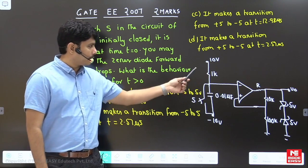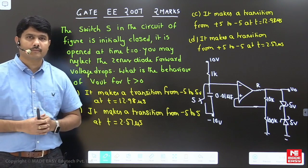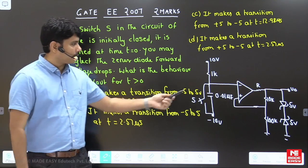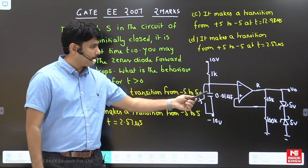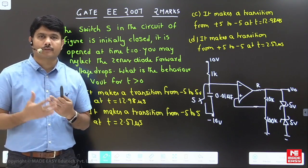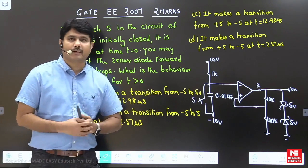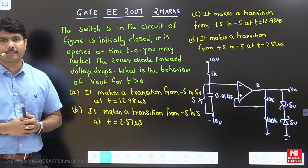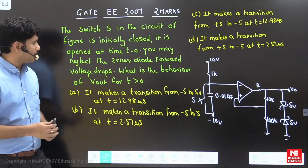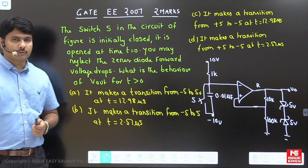Why will this question be difficult for students? You must have knowledge of RC components, op-amp with positive feedback analysis, and zener diode analysis. So three modules need to be understood at a time. This is a GATE Electrical 2007 two-marks question.